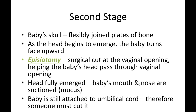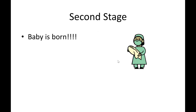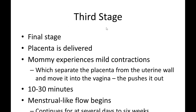Once the head is fully emerged, the baby's mouth and nose are suctioned using a bulb or suction device to clear the airway and allow the respiratory system to start. The umbilical cord, which still attaches the baby to the placenta, is then clamped and cut. The baby is now born.